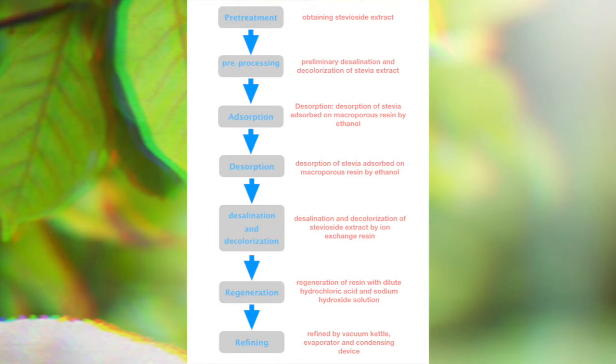Step 3: Adsorption of stevicide. With the selective adsorption of macroporous resin, the macromolecular sugar in the pre-treated solution was adsorbed, and the remaining water, salt, and impurities were discharged into the sewage pipe.